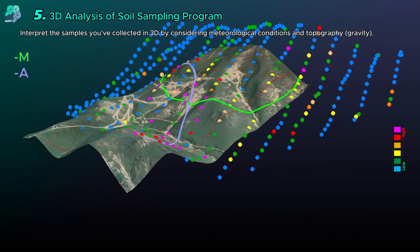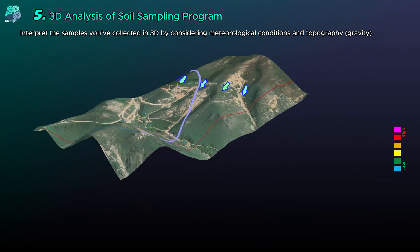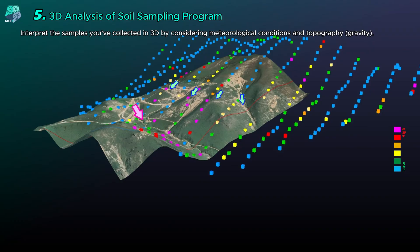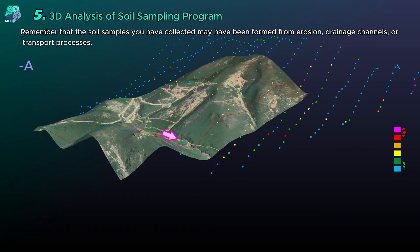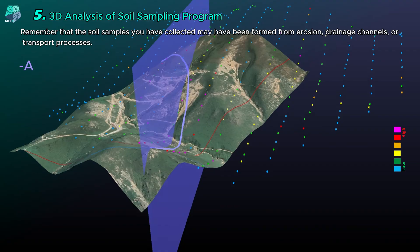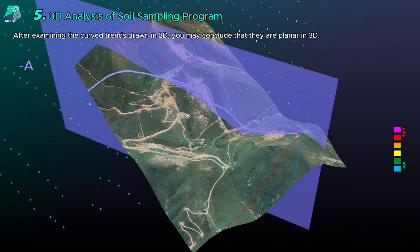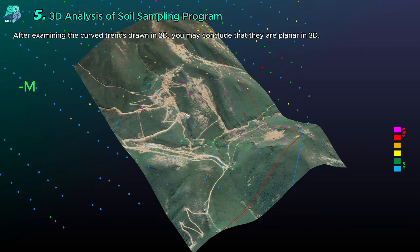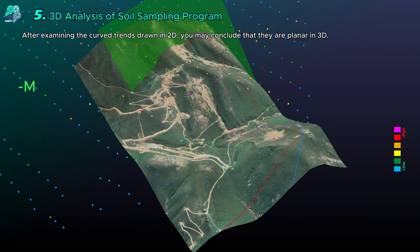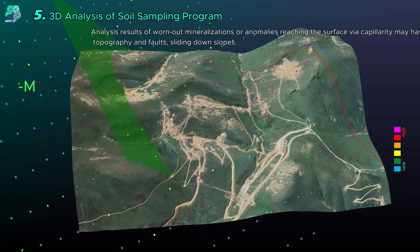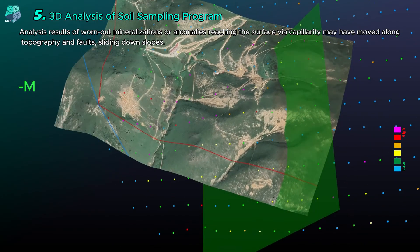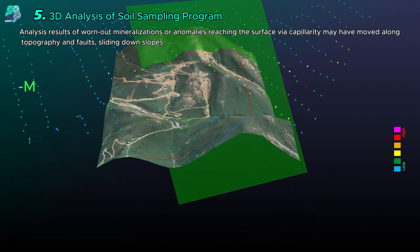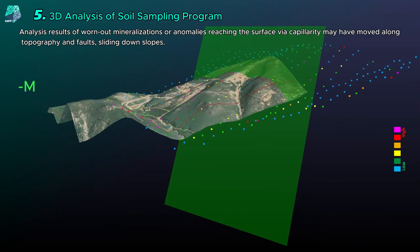Always analyze your systematic soil sampling results in three dimensions. Interpret the samples you have taken by considering meteorological conditions and topography in three dimensions. Remember that the soil samples you have collected may have been formed from erosion, drainage channels, or transport processes. After examining the curved trends drawn in 2D, you may conclude that they are planar in 3D. Analysis results of worn-out mineralizations or anomalies reaching the surface via capillarity may have moved along topography and faults, sliding down slopes.